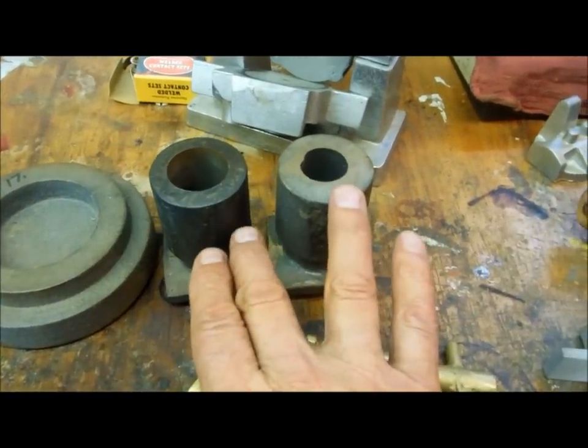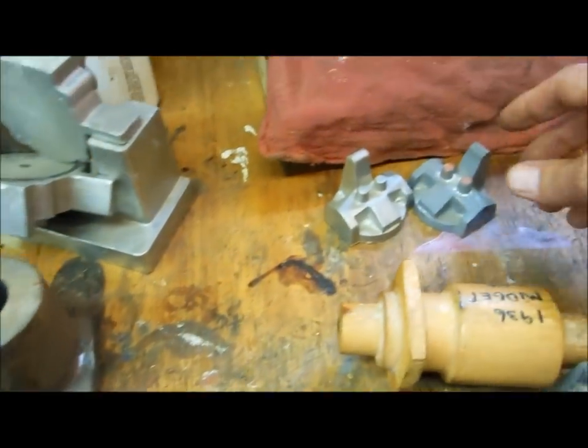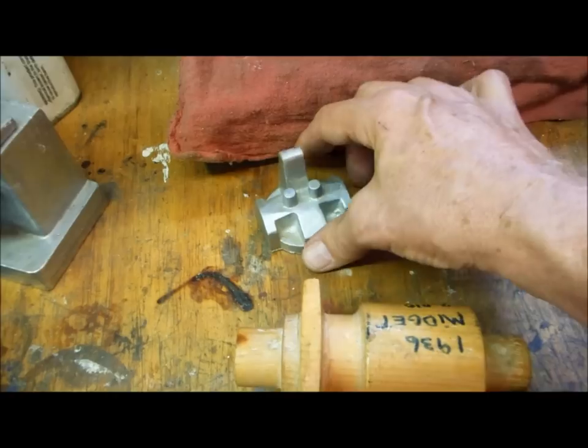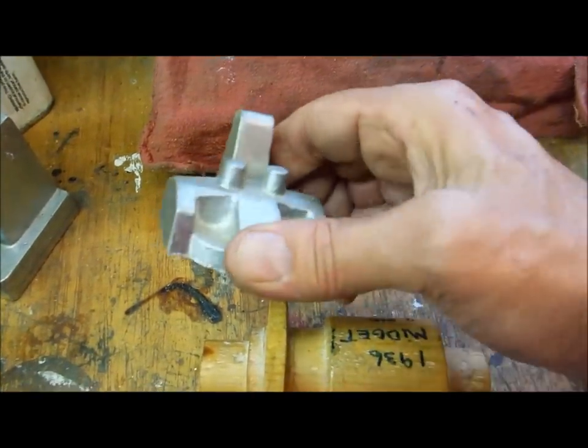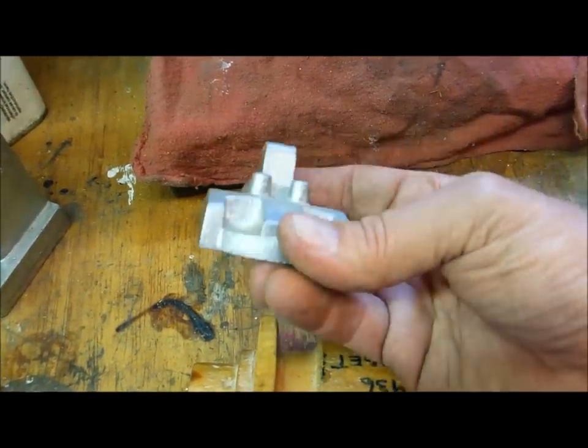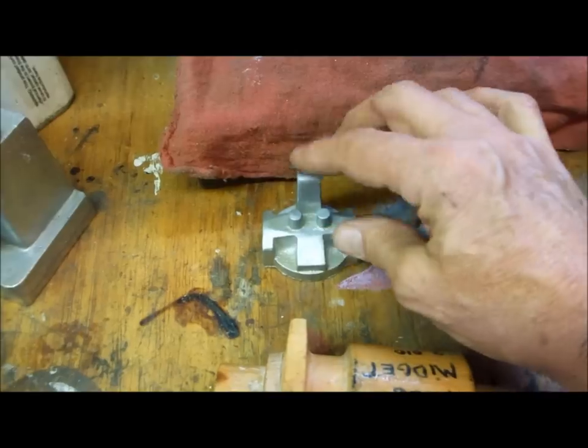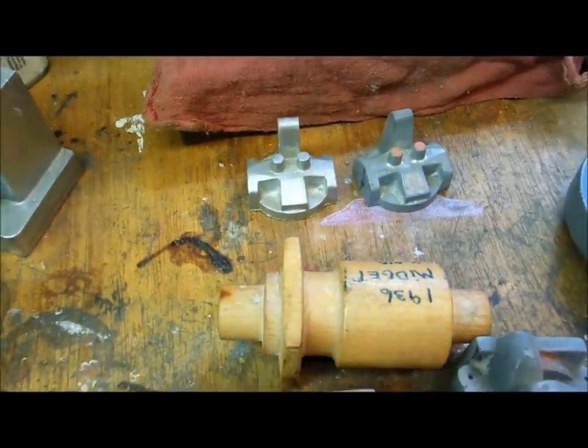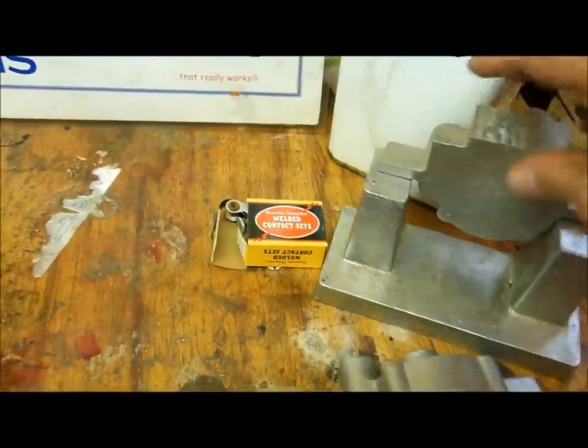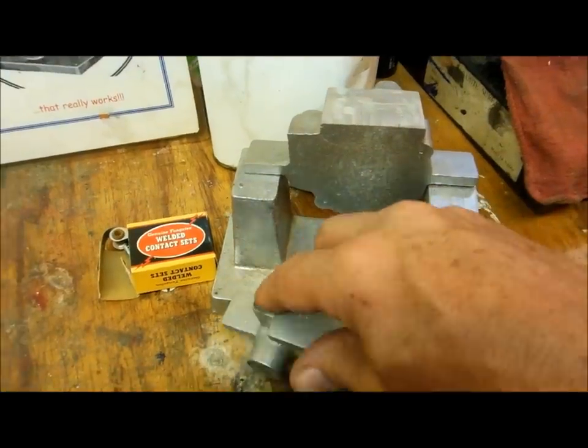I cast the cylinder head from this pattern out of what I call pistonium—old car pistons. They make very nice castings when you get the temperature right. Aluminum pours at about 1200 degrees.